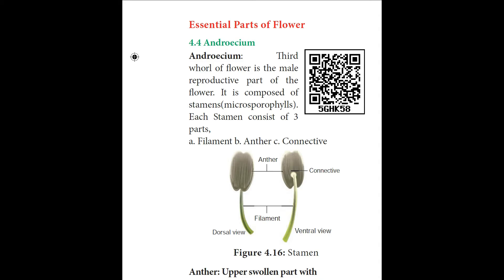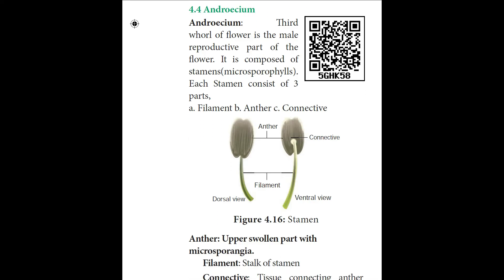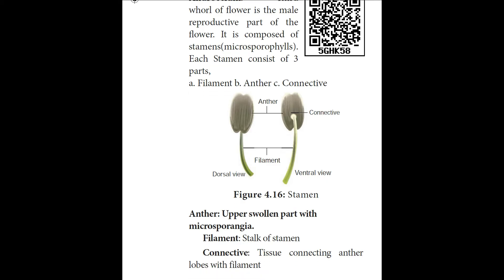When stamens are sterile, they are called staminodes — example: Cassia. Stamens are said to be distinct when they do not fuse with each other; if they do not fuse with other floral parts, they are called free. A flower with free and distinct stamens is said to be polyandrous. According to fusion among themselves, it is called cohesion (connation), and fusion with other floral parts is called adnation.